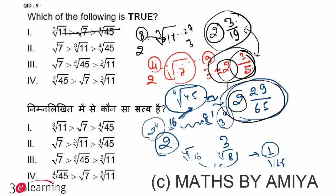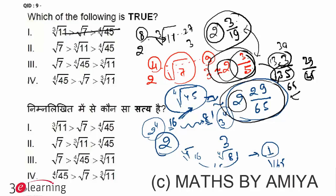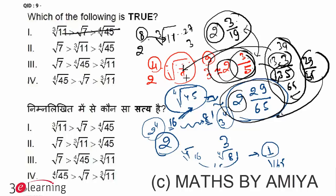Now we have to compare the square root of 7 with the fourth root of 45. We have 3 upon 5 and 29 upon 65. Multiply 3 upon 5 by 13 over 13, giving 39 upon 65. Since 39 upon 65 is greater than 29 upon 65, the square root of 7 is greater than the fourth root of 45. So the square root of 7 is the largest value.